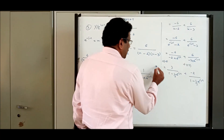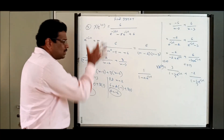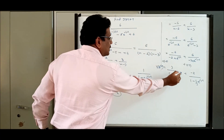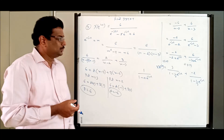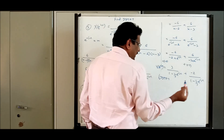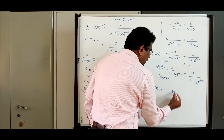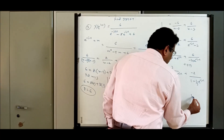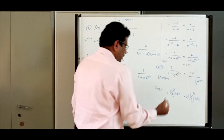The total work done was to break the expression into two parts, each as a constant times a standard form. Now we do the inverse DTFT of each term directly. IDTFT of 3 by (1 minus 1/2 · e^(-jω)) is 3 · (1/2)^n · u(n). IDTFT of 2 by (1 minus 1/3 · e^(-jω)) gives 2 · (1/3)^n · u(n) with the appropriate constant.